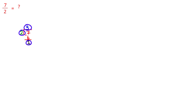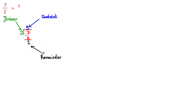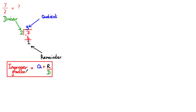These values have special names. This term here is called the divisor — it's the number that divides into the numerator. This term here is called the quotient. And this term here is called the remainder. Using these special terms, we can come up with a general formula that helps us convert improper fractions to mixed fractions.